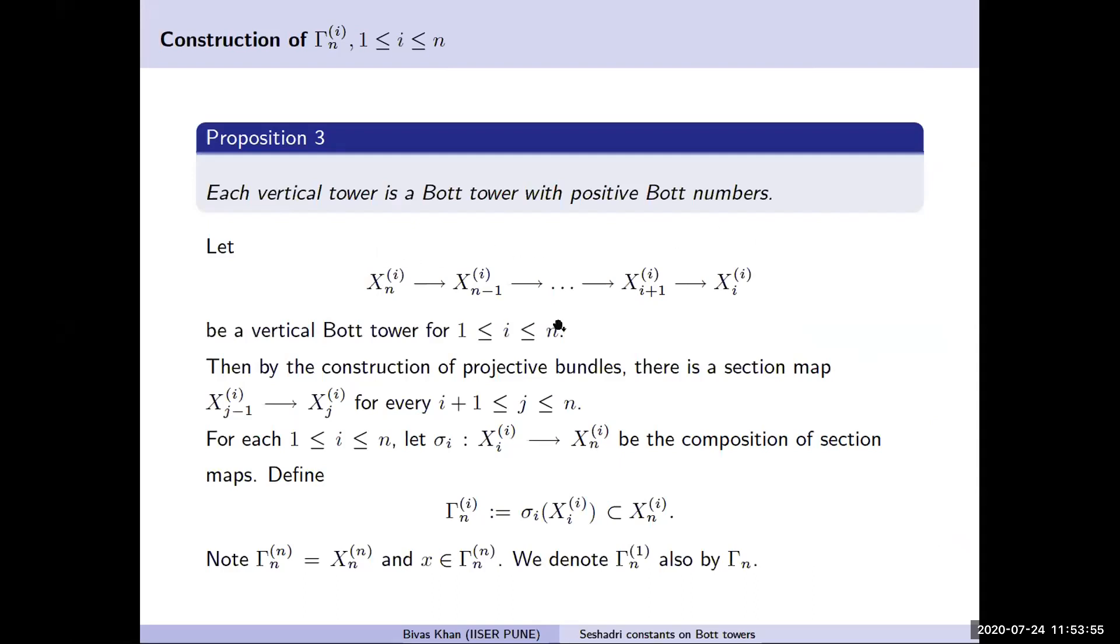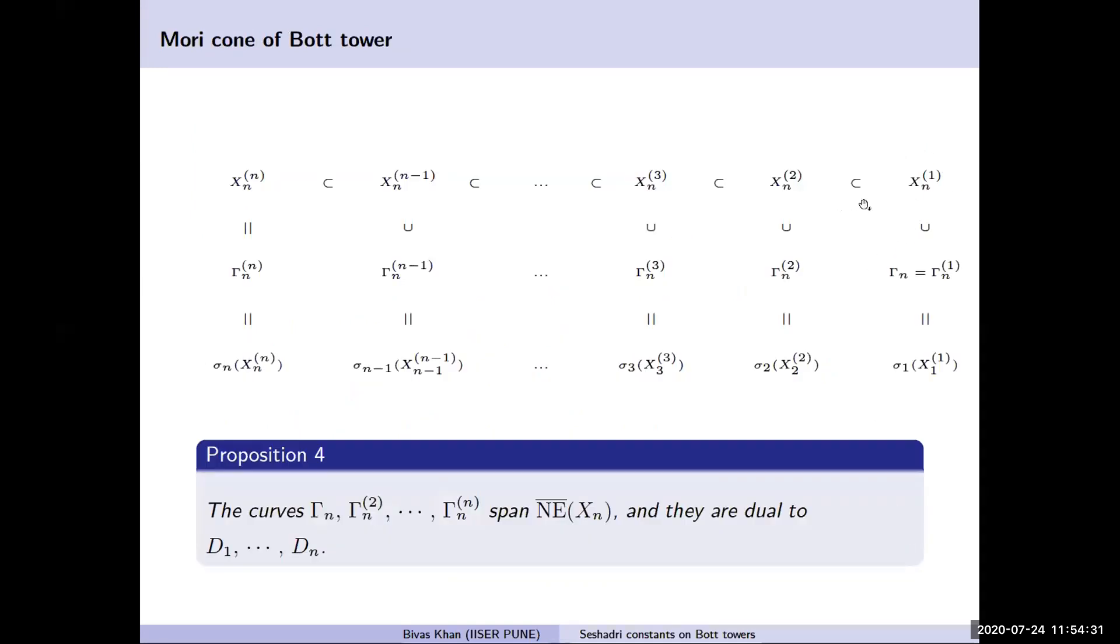Now consider one of the vertical towers. By construction, each of them has a section, and we denote the composite of this section by sigma_r and call gamma_{ni} the image of X_{ii} inside X_{ni}. This will give n curves such that gamma_{nn} is just X_{nn}. So x is inside gamma_{nn}. We have constructed some subvarieties of X_n like X_{n2} up to X_{nn}, and each of them contains a curve gamma_{n2}, gamma_{n3}, and so on.